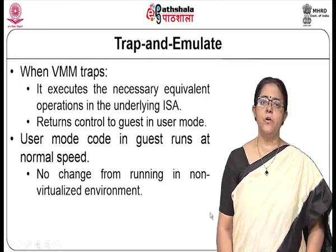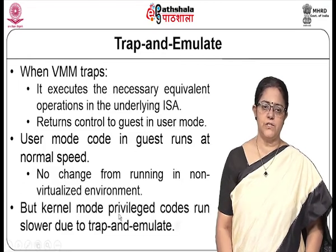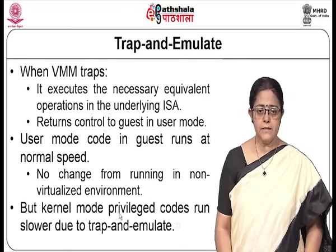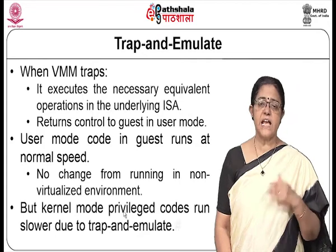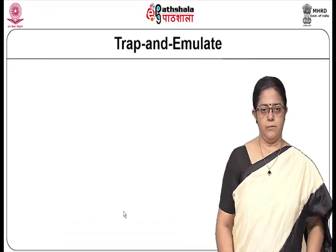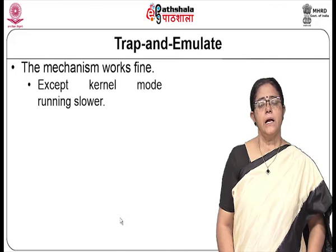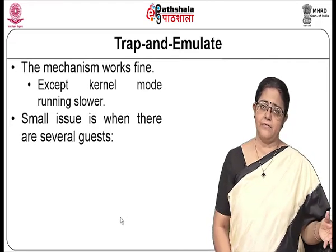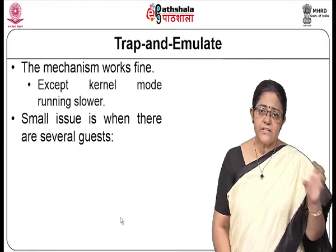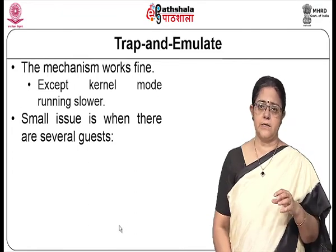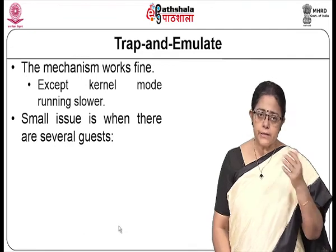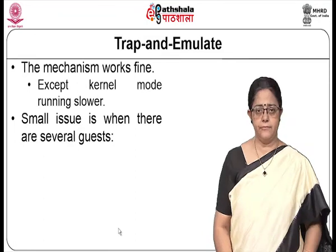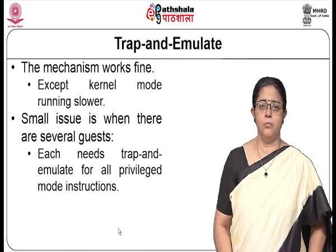Only the privileged instructions executed by the guest OS will be trapped to the VMM, and the VMM has to take control of those instructions. Whenever the VMM traps, it executes the necessary equivalent in the underlying ISA as expected by the user and the guest OS, and then returns control to the guest in user mode. The VMM runs in privileged mode; user mode code runs at normal speed since all instructions are directly executed in hardware. However, kernel mode or privileged code will run at a slower speed because those have to be trapped and emulated. When there are several guests, each trying to run privileged instructions, the cost of trap-and-emulate for each guest definitely becomes more expensive.